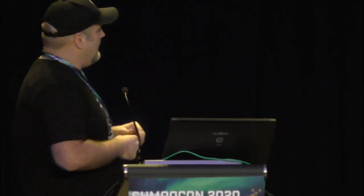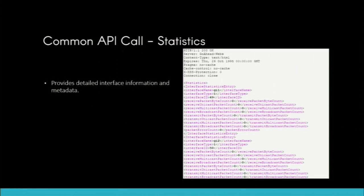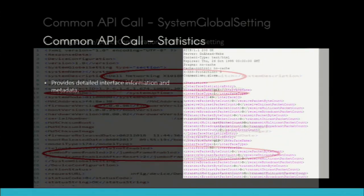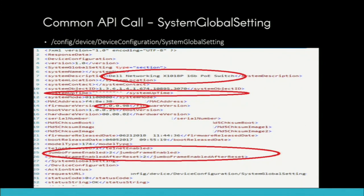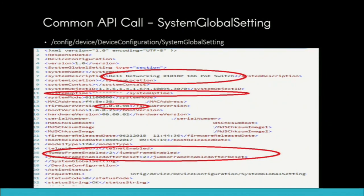Another great API call that works on many devices I tested is the statistics entry, which gives you a live statistics view of all interfaces in real time. If you're mapping a network and don't know where traffic is going, you can throw traffic at the device and see where it goes out. There's also the system global setting, which gives you all device information — here it's a Dell Networking 1018P 1-gigabyte PoE switch. You get the uptime, exact firmware version, whether jumbo frames are enabled, and crucially, a telnet enabled field.